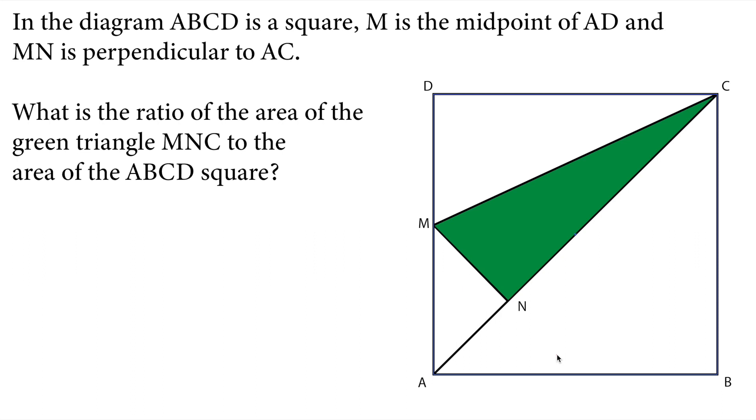In the diagram ABCD is a square, M is the midpoint of AD and MN is perpendicular to AC. What is the ratio of the area of the green triangle MNC to the area of ABCD square?